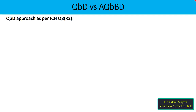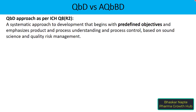So what is the definition of QBD according to ICH Q8? It is a systematic approach to development that begins with predefined objectives and emphasizes product and process understanding and process control based on sound science and quality risk management. We have to define those predefined objectives as per product development, which we will discuss in the coming slides.